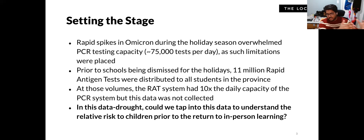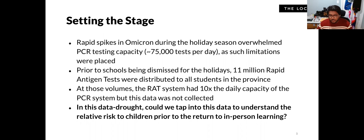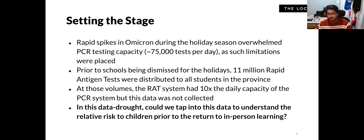When you look at it comparatively, this new informal RAT system had 10 times the daily capacity of the PCR system. But no data was being collected from it. So we had this absence of data from limited PCR testing but an abundance of potential data in the RAT system. We thought: in this data drought, could we tap into RAT test data to help report relative risk to children returning to school in January?